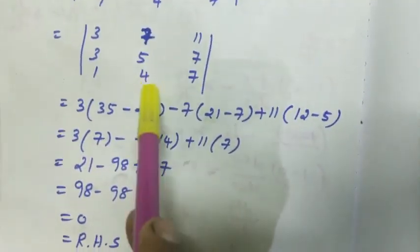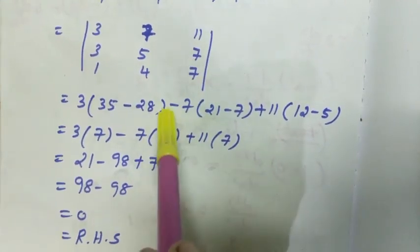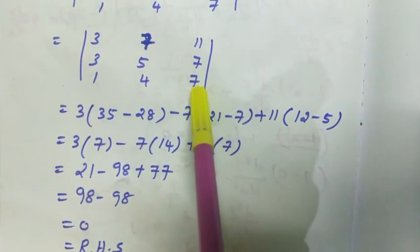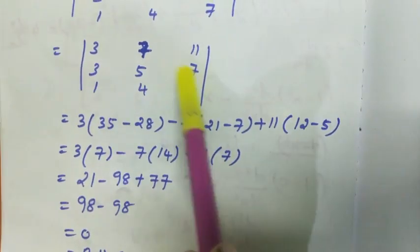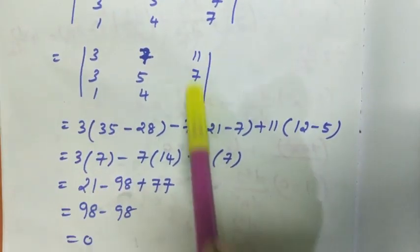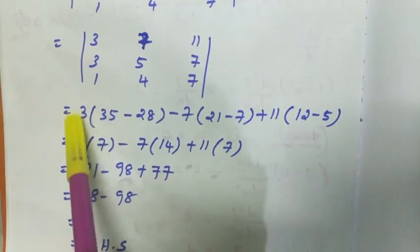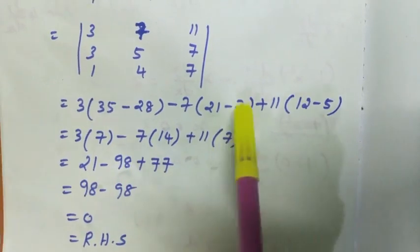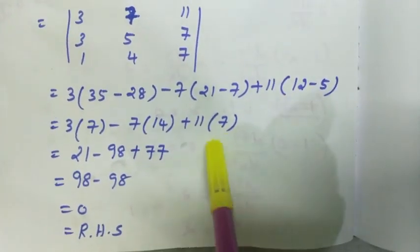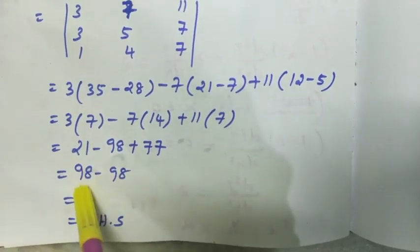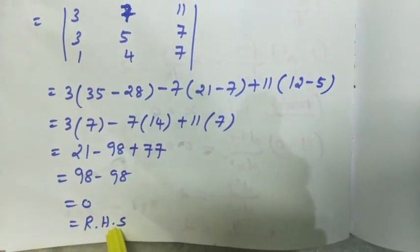This is equal to 3 into 7 minus 7 into 3 into 7 minus 7 into 14 plus 11 into 7, which is 21 minus 98 plus 77. 98 minus 98 is equal to 0, so right hand side.